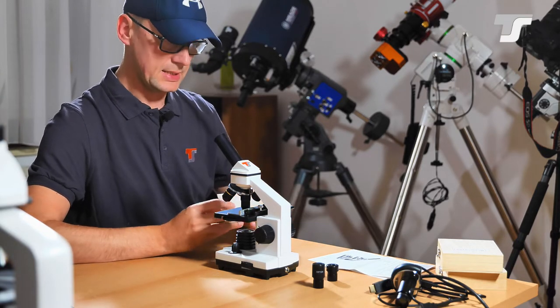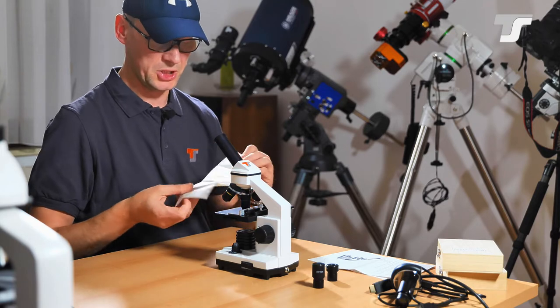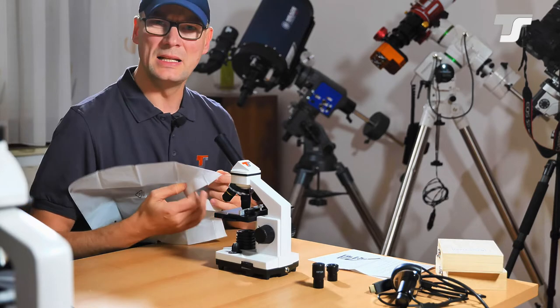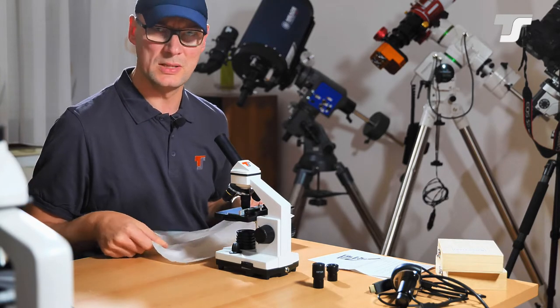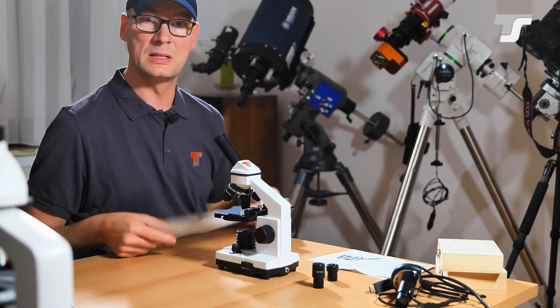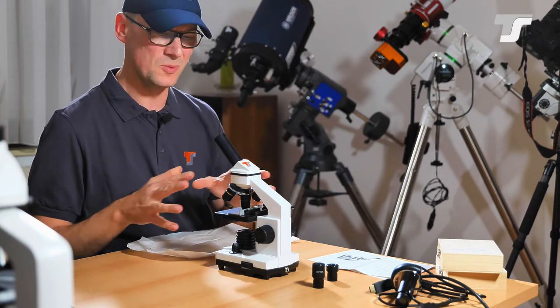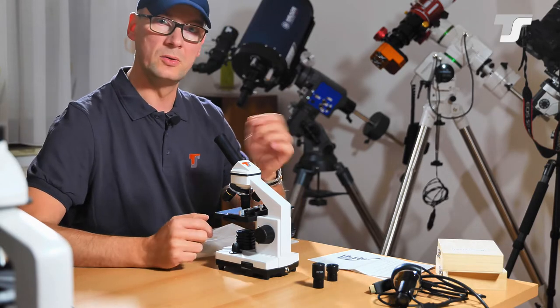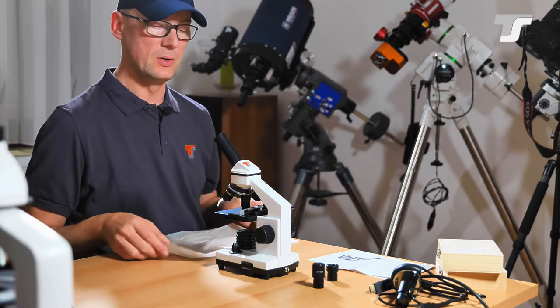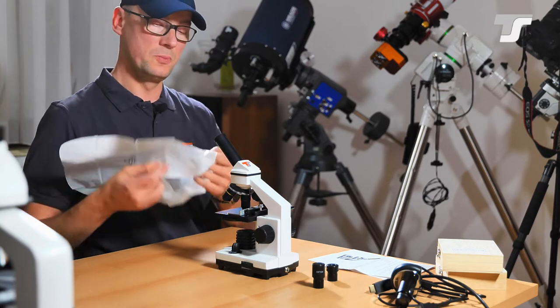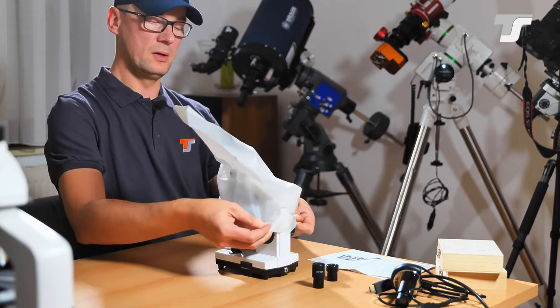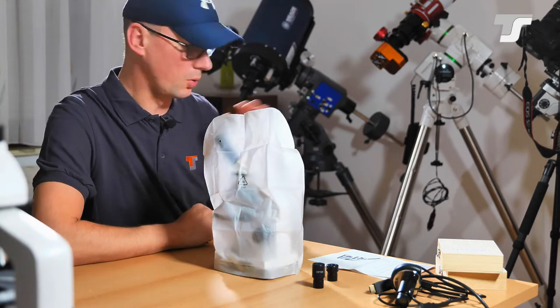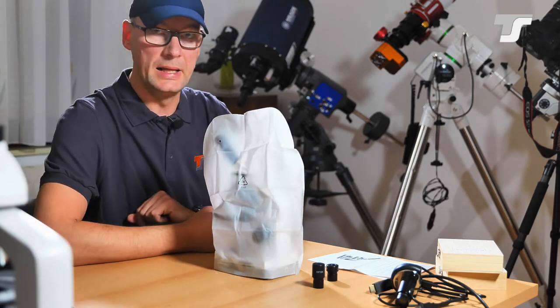Another thing in the box is this pouch here. This is maybe you have seen these pouches standing around in laboratories or somewhere. This is just used to cover it from dust. These microscopes are collecting dust like nothing. It's incredible. And you need a brush or something to clean them. So it's far more easy to put this pouch, this bag, over it when you're not using the microscope. And you don't want to put it back in the foam box.